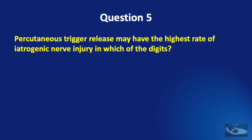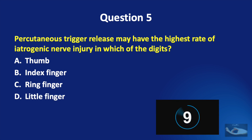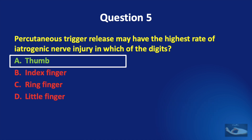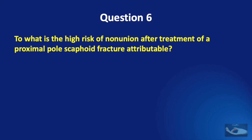Question number five: percutaneous trigger release may have the highest rate of iatrogenic nerve injury in which of the digits — the thumb, index finger, ring finger, or little finger? The correct answer is the thumb. The chance of injury is greater in the thumb because the digital nerves to the thumb are closer together to the midline and to the A1 pulley of the thumb, making them more prone to injury.